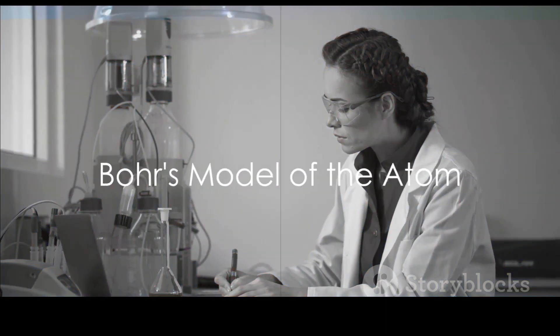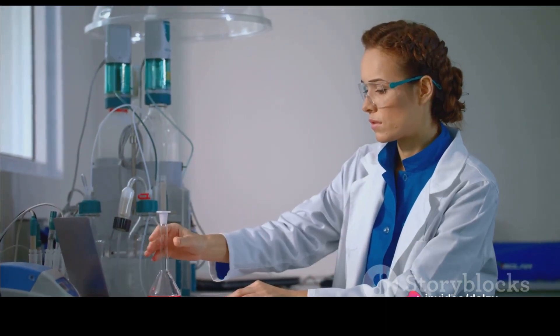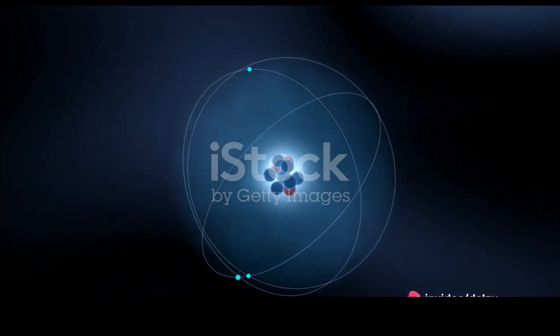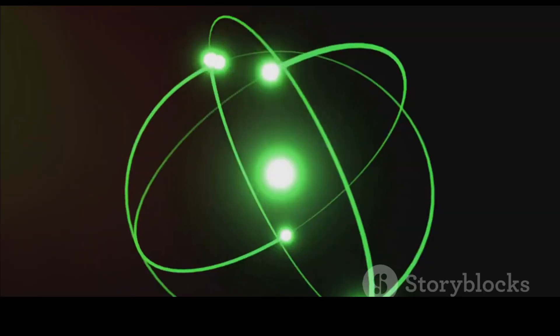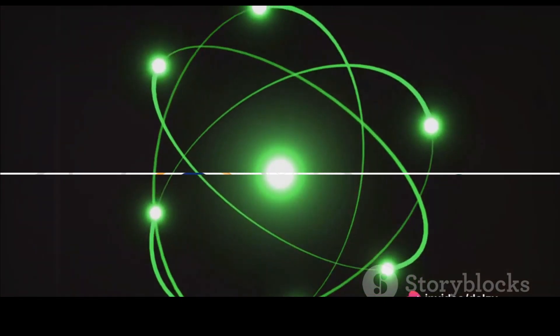A few years later, in 1913, Danish physicist Niels Bohr proposed a new model of the atom. He suggested that electrons move around the nucleus in distinct energy levels or shells. This model helped explain why atoms absorb or emit light in specific amounts.